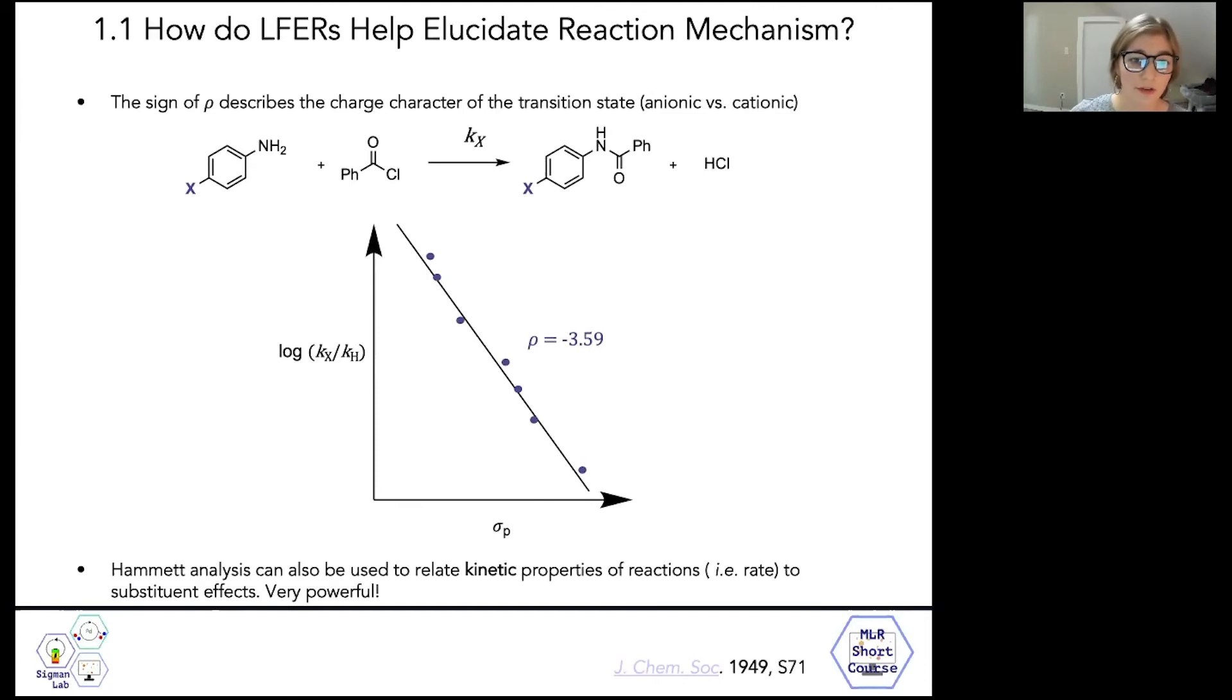In this example, we know that the rate determining step of the reaction results in the accumulation of cationic character from the negative rho value. In this system, it means that the nucleophilic attack by the aniline derivative has to be rate determining. So you can see that this type of analysis actually teaches us a lot about reaction mechanism.